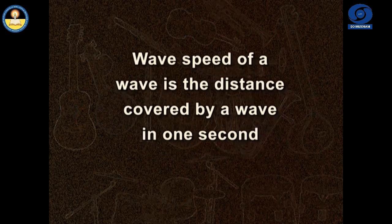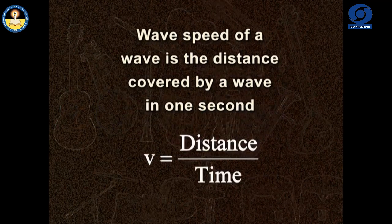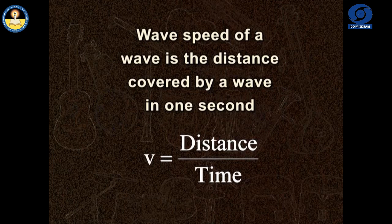Mathematically, the wave speed of a wave is the distance covered by the wave in one second. It is represented by the letter V.